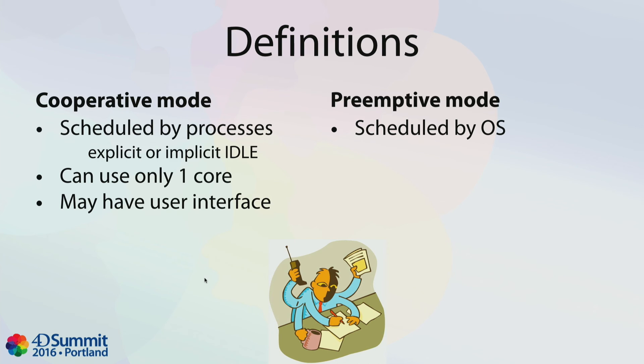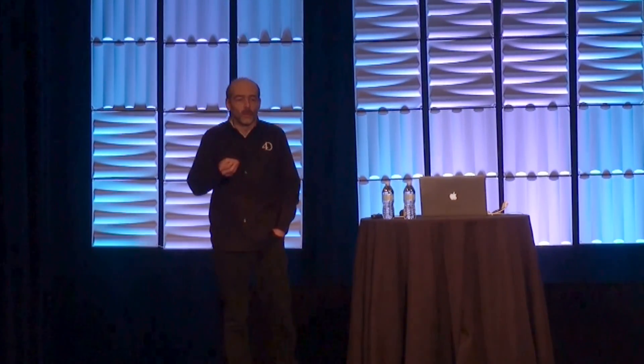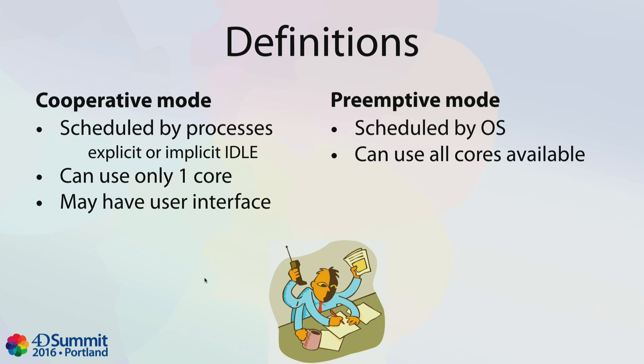In preemptive mode, you don't have to call the IDLE command because the 4D process doesn't have to cooperate to share the CPU — it's done by the operating system. The OS preemptively gives the CPU to one thread or another. And if you have multiple CPUs in your machine, more than one thread can execute at the same time. So the benefit is that you can use all the cores of your machine.